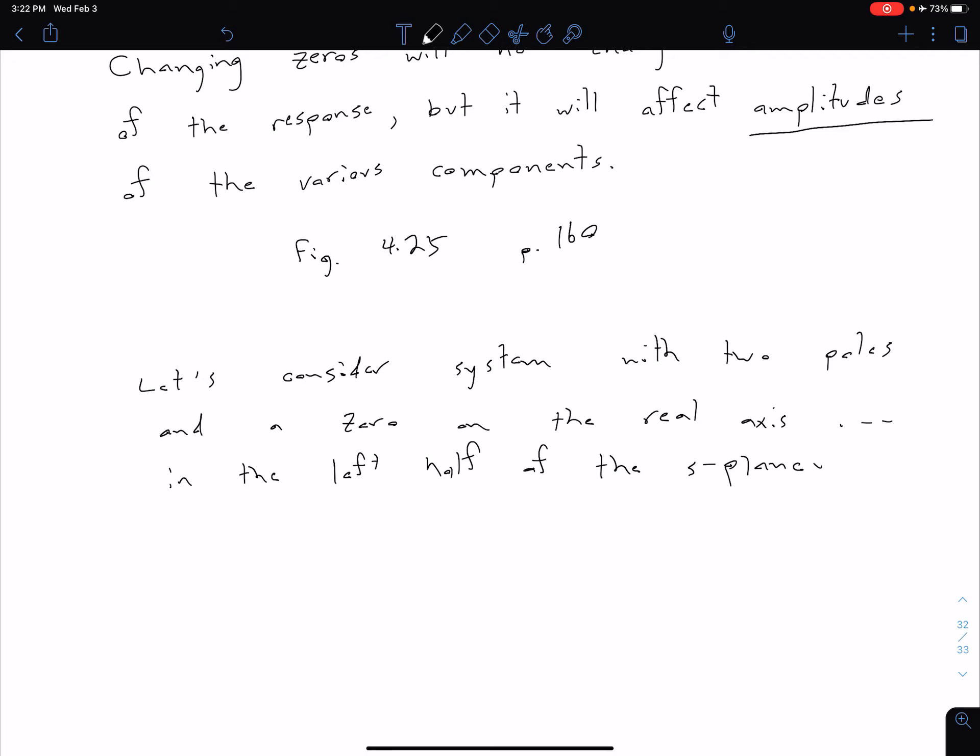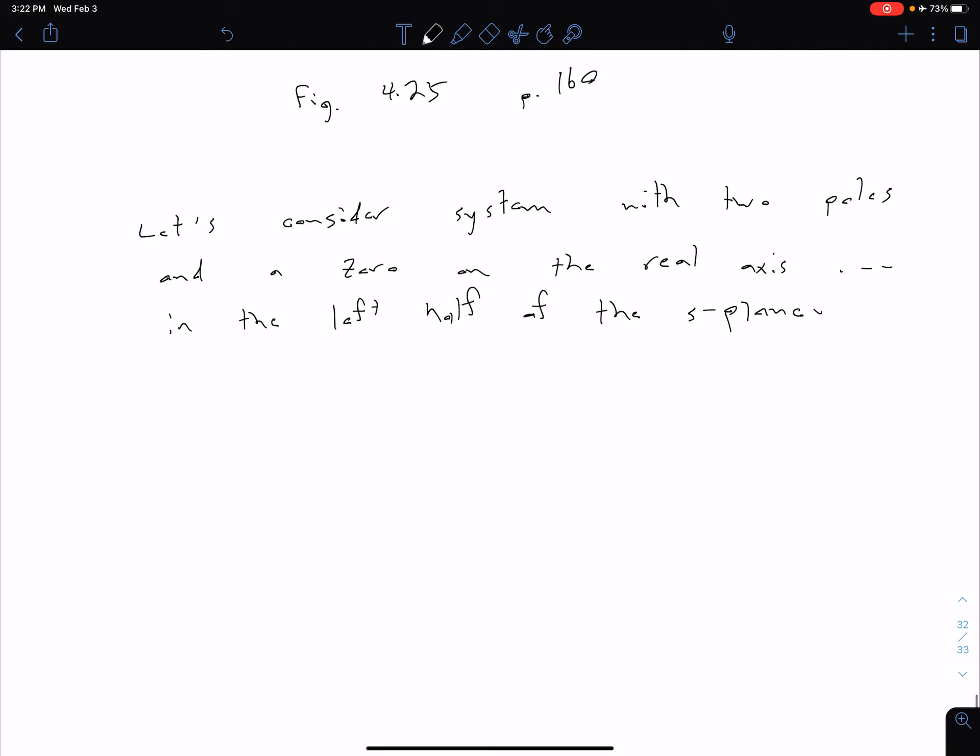And so what that means is if we want to make a simple transfer function, we can say T(s) equals, now for our zero, let's just say it's s plus A. So because we have s plus A, that indicates our zero's at a location of negative A, which is indeed in the left half plane. Now for our two poles, let's just say there are some arbitrary locations, s plus B and s plus C.